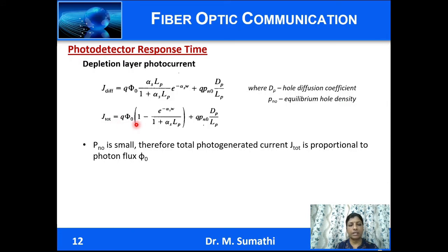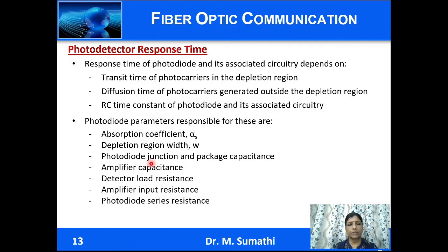The total current density is the sum of drift and diffusion current densities. Since p_n0, the equilibrium hole density, is very small, the total current density is proportional to the photon flux phi-naught. Response time determines how fast the output current changes for a change in input optical power incident on the photodiode. The response time depends on the transit time of photocarriers in the depletion region, the diffusion time of photocarriers generated outside the depletion region, and the RC time constant of the photodiode and its associated circuitry.